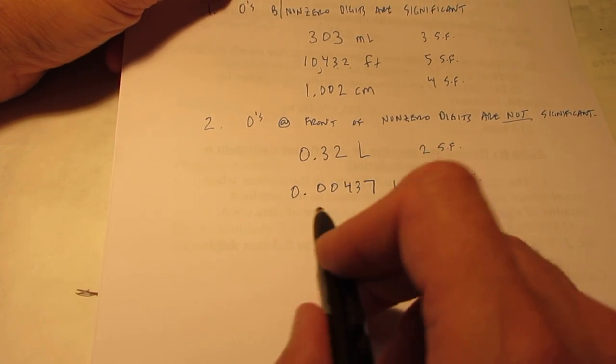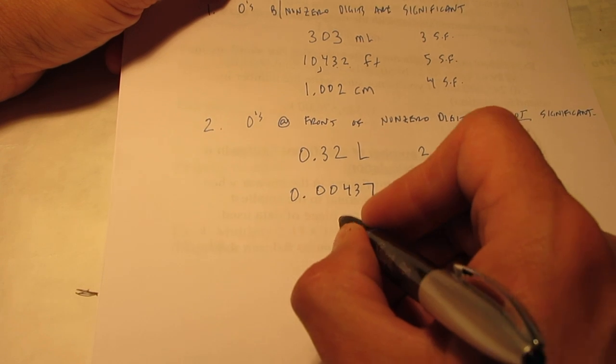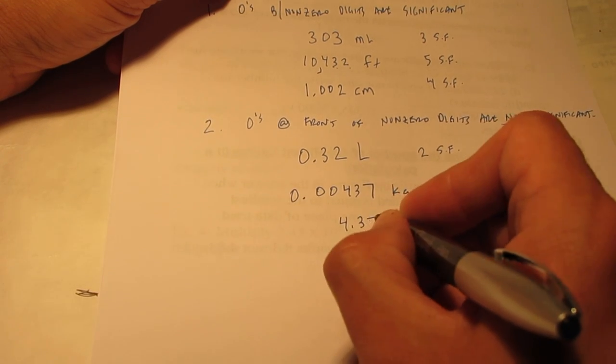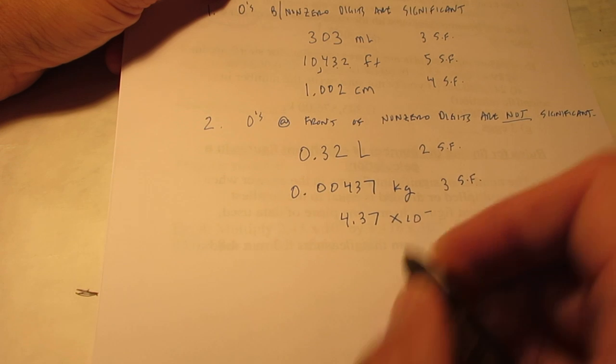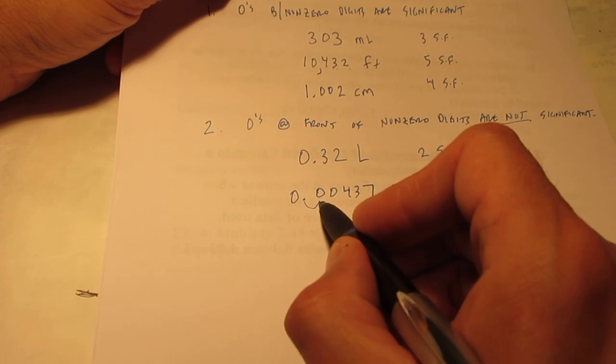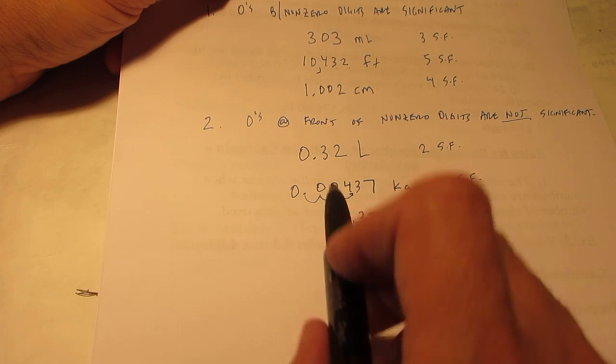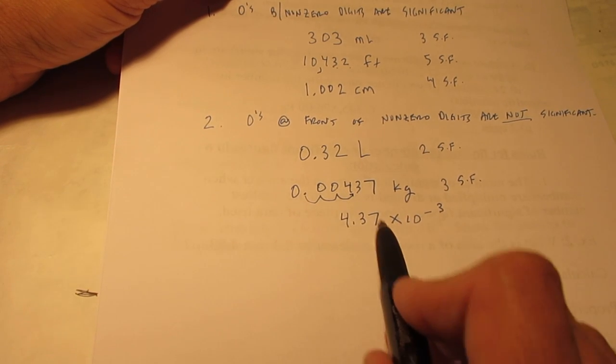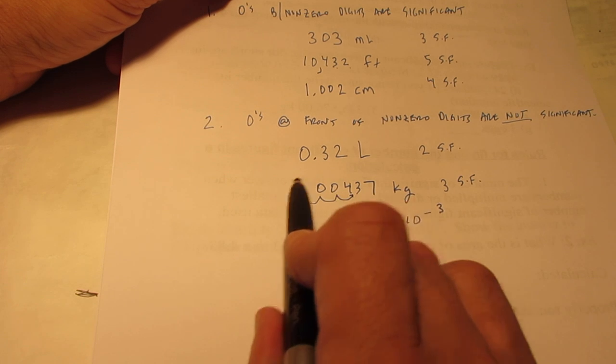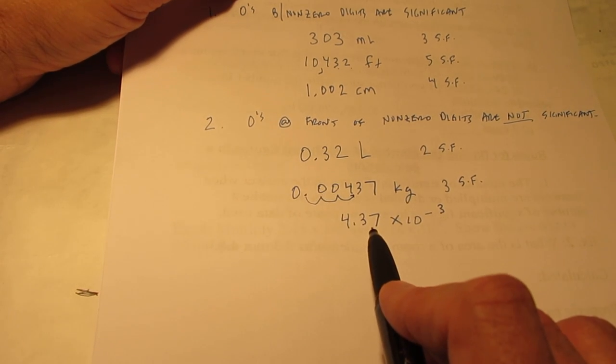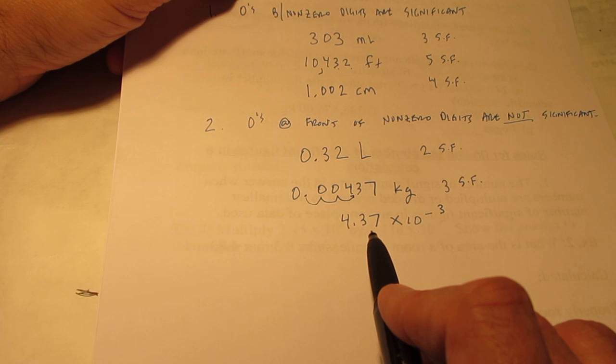A quick way to check yourselves is to write that measurement in scientific notation form. Wouldn't that be 4.37 times 10 to the negative third? So, couldn't I write this number like this without those zeros? Since I can write that number without the zeros, those numbers must not be significant.